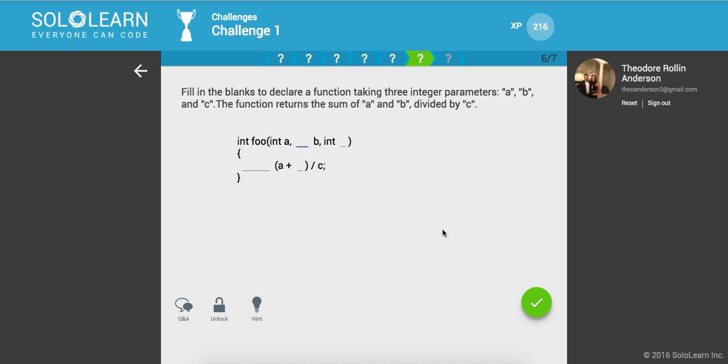Fill in the blanks to declare a function taking three integer parameters, a, b, and c. Int a, int b, and int c. This function returns the sum of a and b divided by c. All right, cool.